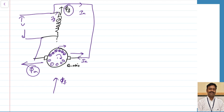The torque equation we have derived for the DC machine: torque is equal to 1/(2π) times phi times Z (number of conductors) times P (number of poles) divided by A (number of parallel paths), times the current passing through the conductor I_a. Now, practically, instead of DC, if I am connecting to AC, what will be the equation?